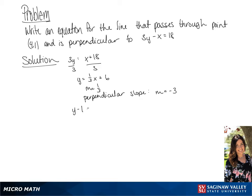Now we're going to put this in point slope form. So we have y minus 1 equals negative 3 times x minus 4.